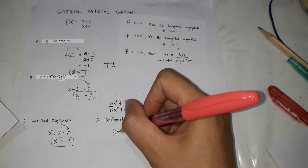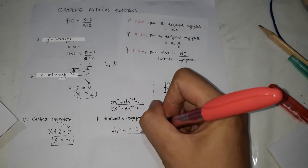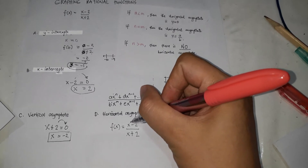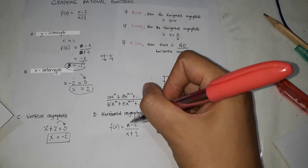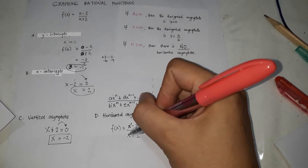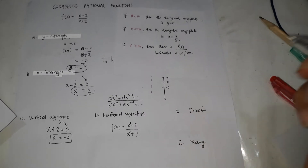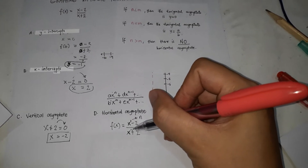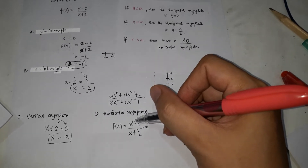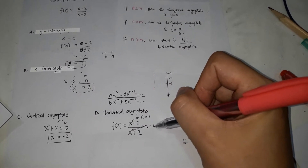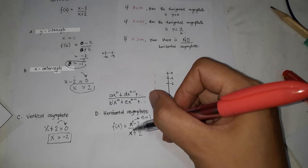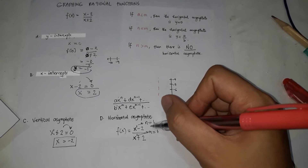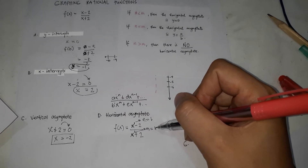For our example f of x equals x minus 2 over x plus 2, the highest exponent in the numerator is 1 — when there's no written exponent on x, it is understood to be 1. So n equals 1 and m equals 1, meaning they are equal.